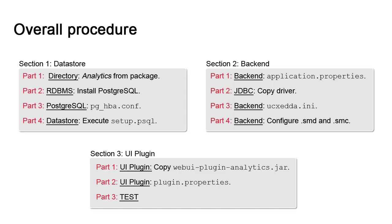In the first section, we copy the analytics directory from the install package to the instance directory. We install PostgreSQL, the required database system for analytics. We configure the database system so that it's accessible over any type of connection and execute a script to deploy the analytics data structures.